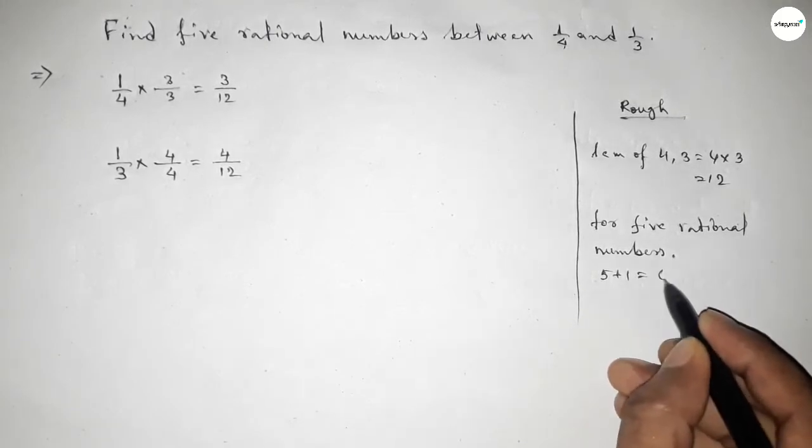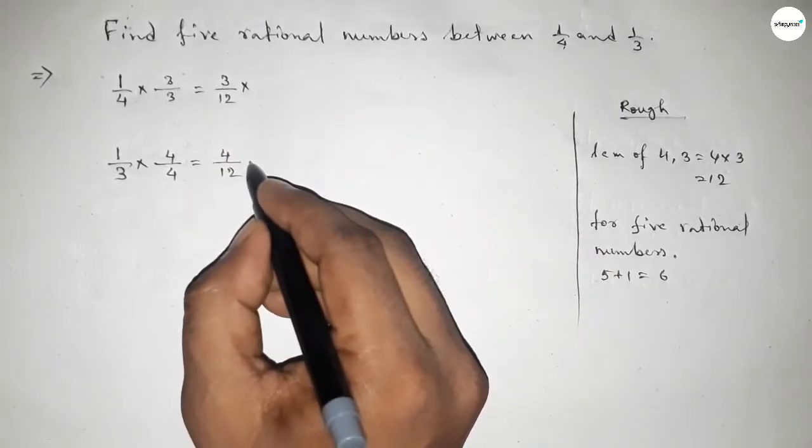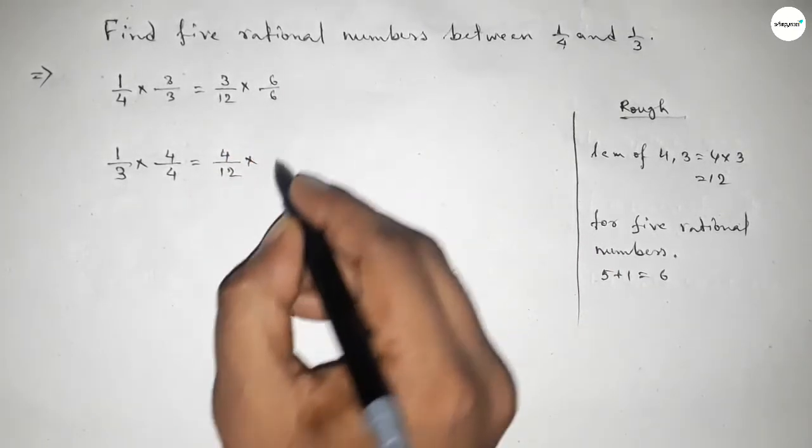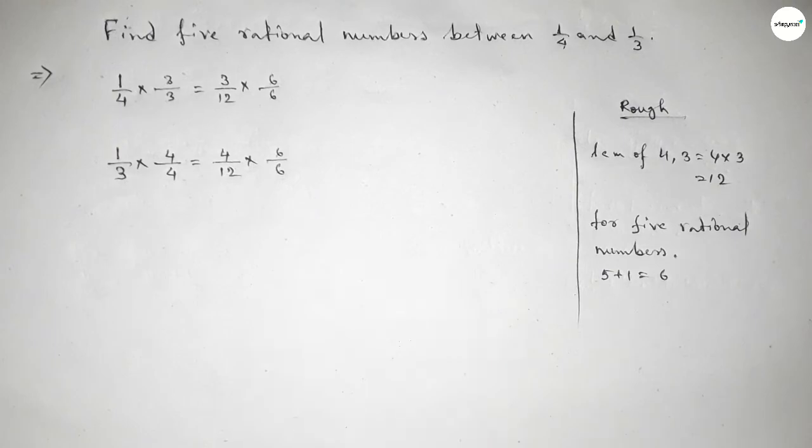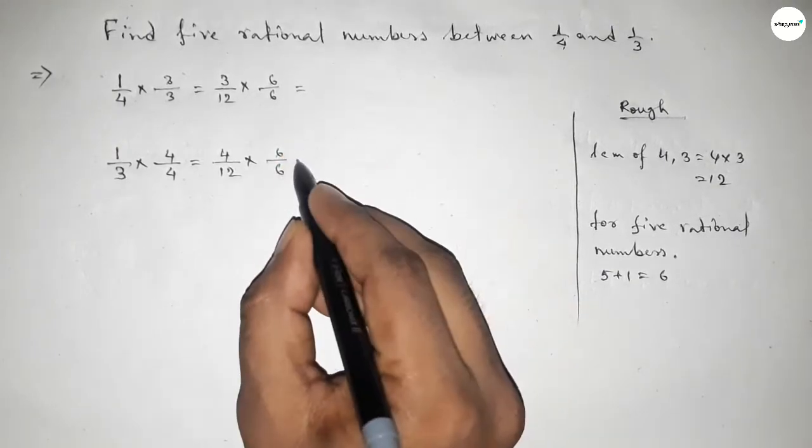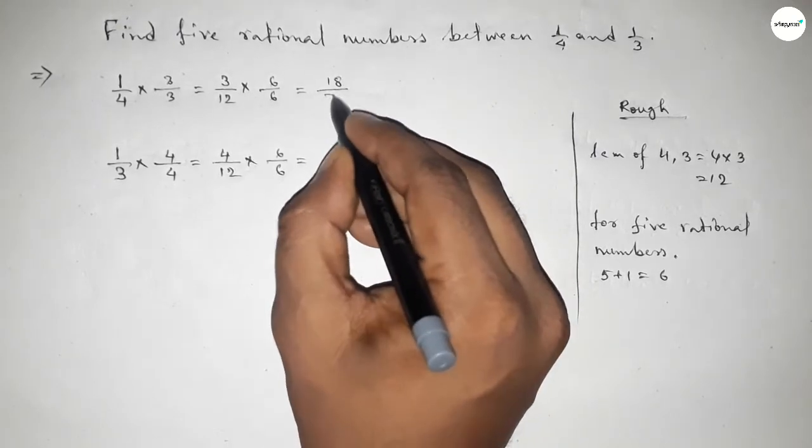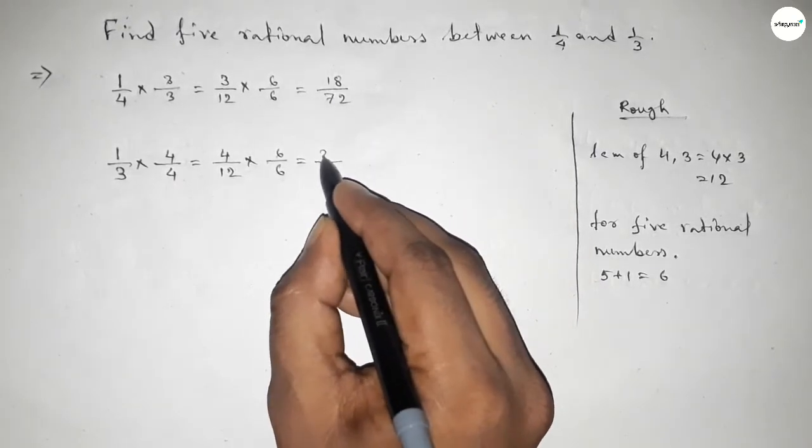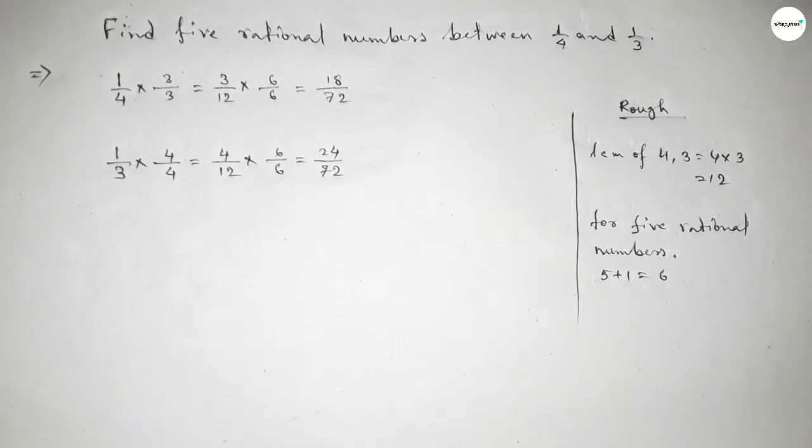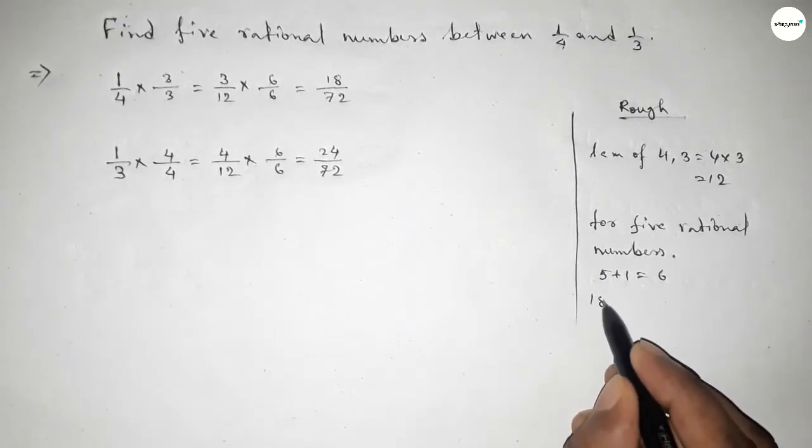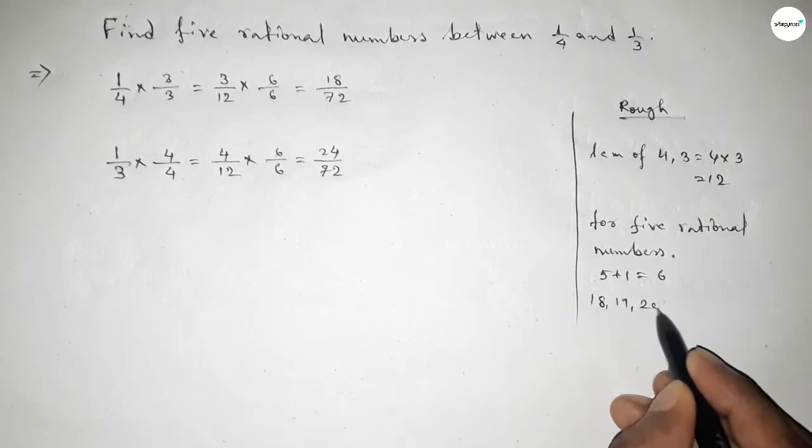By this way here up and down 6 and here also up and down 6. Now this is 18 over 72 and this is 24 over 72. Now between 18 to 24 we can get five natural numbers and by these natural numbers we can form five rational numbers.